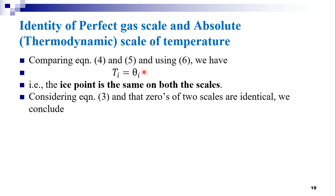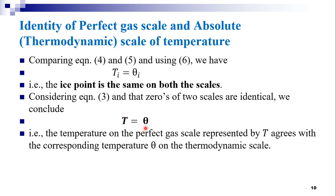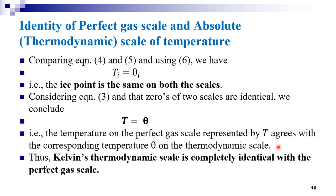Considering equation 3 and that the zeros of the two scales are identical, we conclude that T = θ. That is, the temperature on the perfect gas scale represented by T agrees with the corresponding temperature θ on the thermodynamic scale. Thus, Kelvin's thermodynamic scale is completely identical with the perfect gas scale. This is the identity of the perfect gas scale and the absolute scale of temperature.